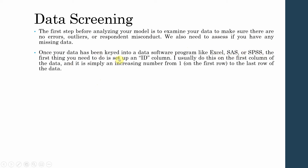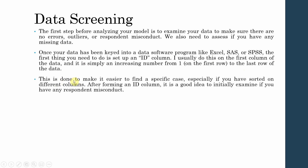What I normally do is put the ID column in the first column of the data — it is simply an increasing number from one up until the last row of the data. This is done to make it easier to find a specific case, especially if you have sorted on the different columns. After forming an ID column, it is a good idea to initially examine if you have any respondent misconduct.